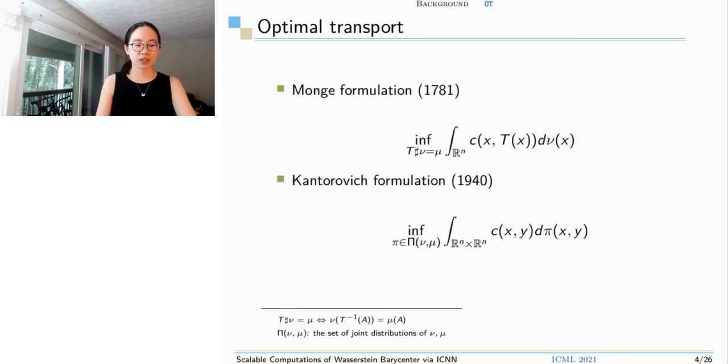Wasserstein metric is originally a concept in the optimal transport theory. Optimal transport theory is a powerful tool in the study of probability distributions. It dates back to 1781.